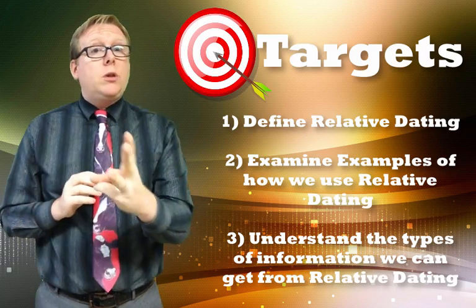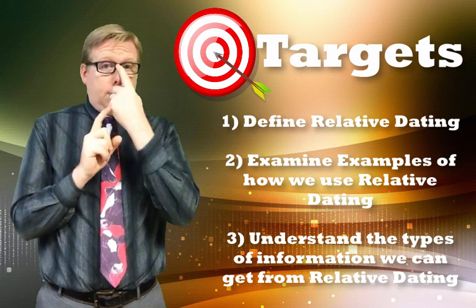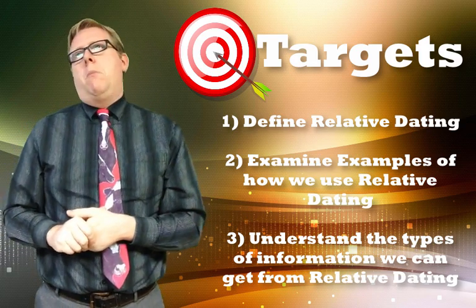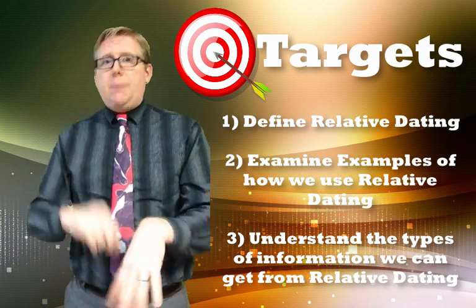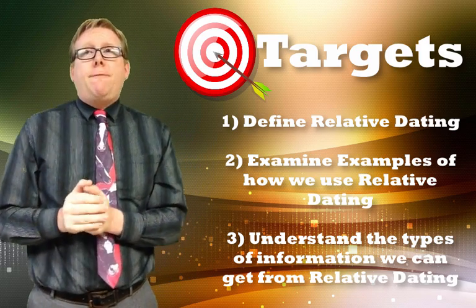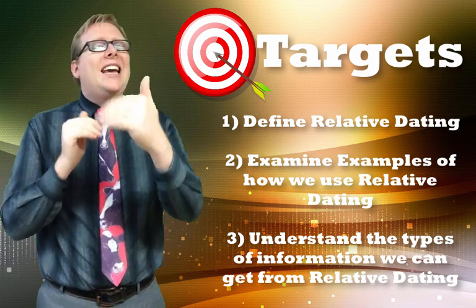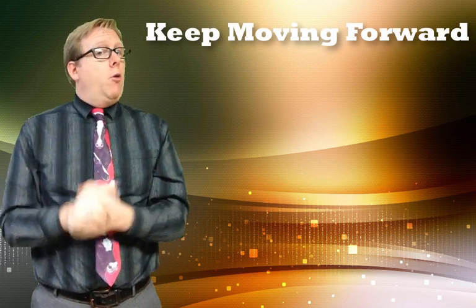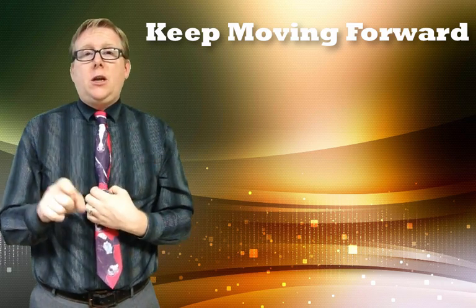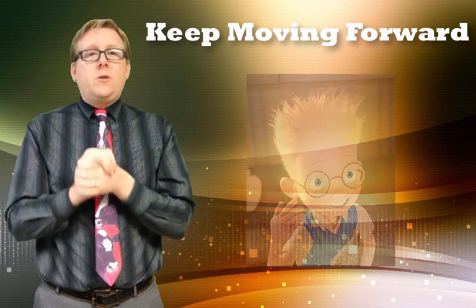Later on in some videos, we're going to use geology to see how it uses relative dating to figure out — not exact dates, but orders of events. And we'll see later on exactly how we figure out exact dates. But I wanted to introduce this idea of relative dating. So let's recap the three things we did: one, we defined relative dating — it's using relationships to figure out the order of something; two, we looked at some examples and you wrote them in your Cornell note sheet; and finally, we understand that relative dating gives us orders, not exact dates — we can put events in order. Remember, you can always hit pause if something's confusing, rewind it, or watch it again. Always remember to keep moving forward.